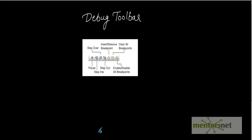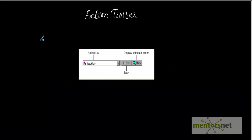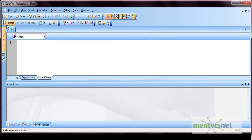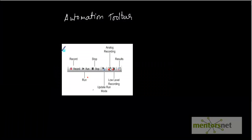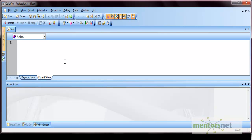The next is the action toolbar, where all your actions get listed — whatever actions you are working on are listed here. Finally, there is the automation toolbar, which has options like Record to start a recording, Run to run a test, Stop to stop a test that is already executing (shortcut F4), two different recording modes, and a results icon to view the test results.